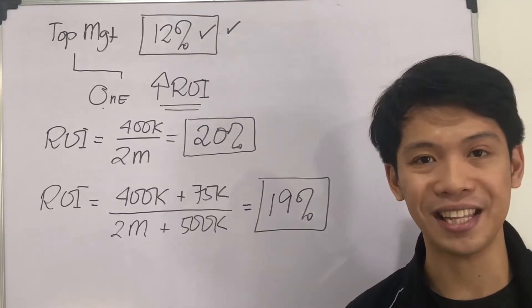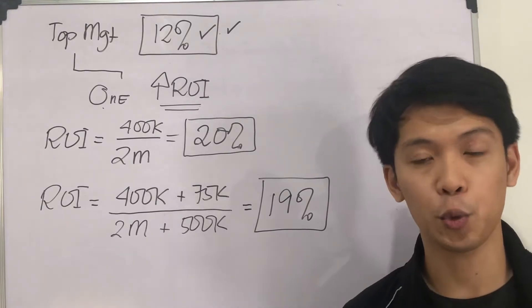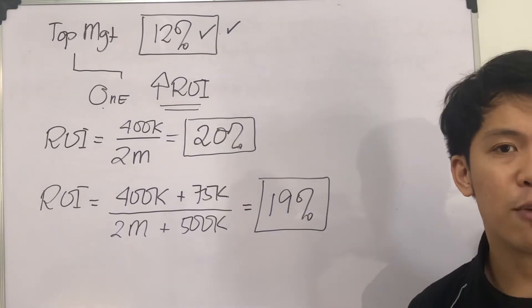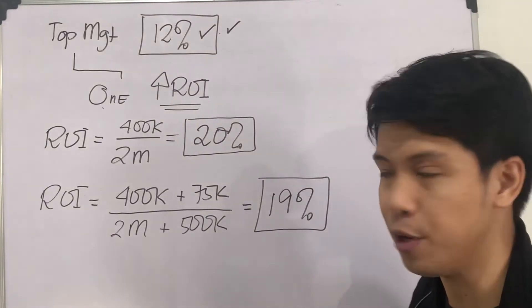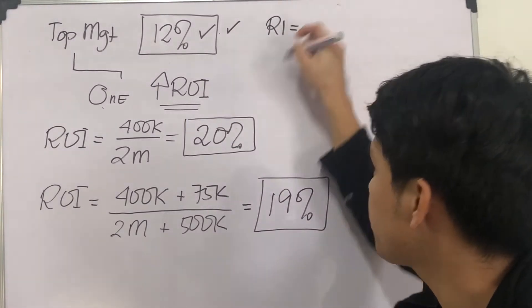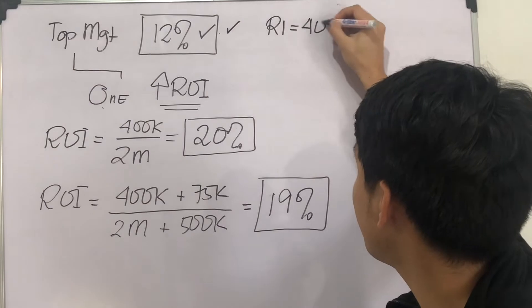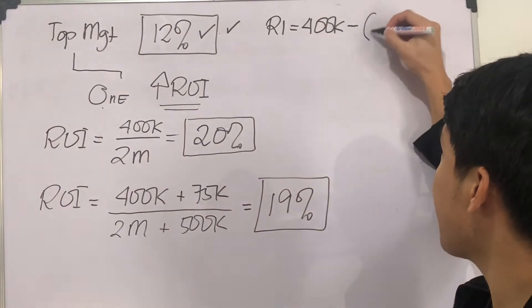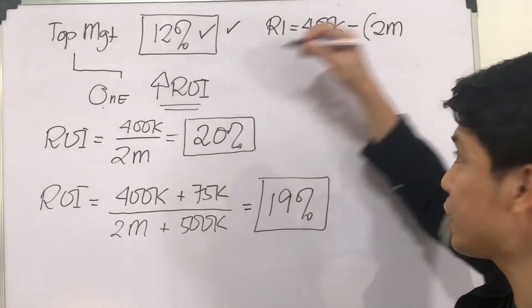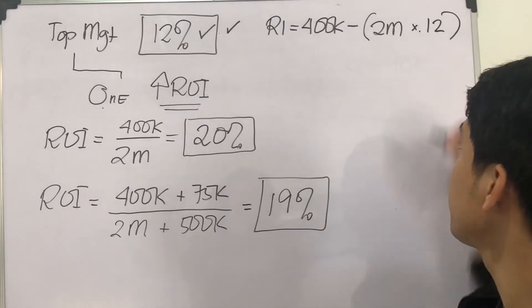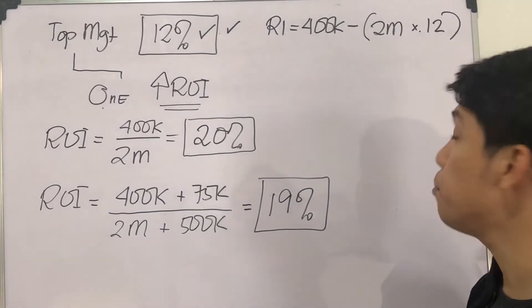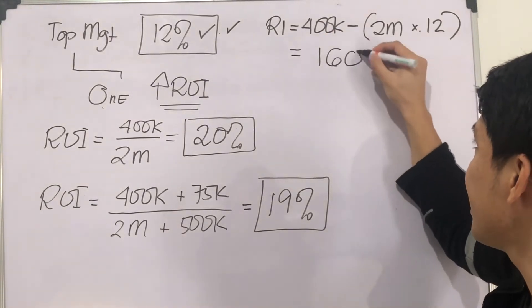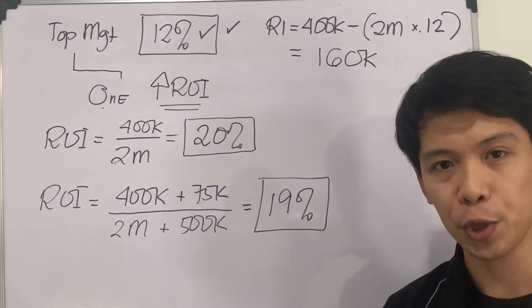Let us calculate the residual income assuming that we are not going to take the project. If we are not going to take the project, our RI will be income, which is $400,000, less the investment of $2 million. Top management requires us to earn at least 12%. $400,000 minus $2 million times 12%, this is equal to $160,000.